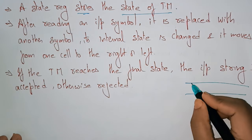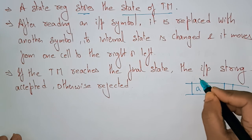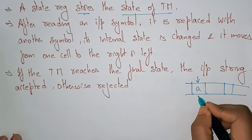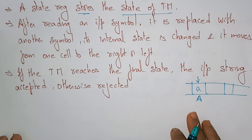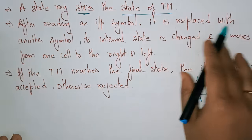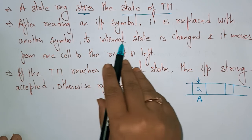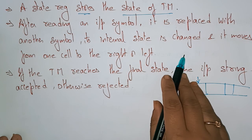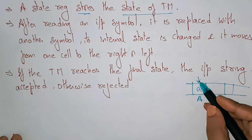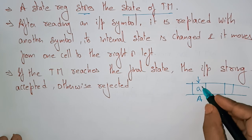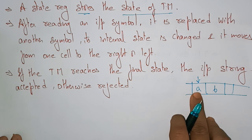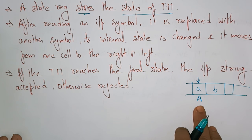A state register stores the state of the Turing Machine. After reading an input symbol, whatever symbol is present on the tape is replaced with another symbol — the terminal or non-terminal. Its internal state is changed, and it moves from one cell to the right or left.